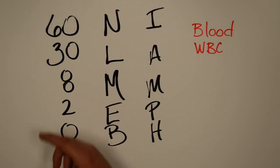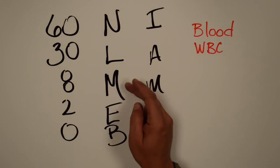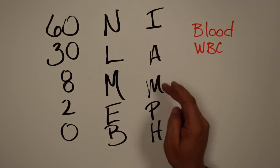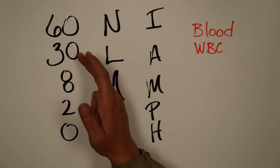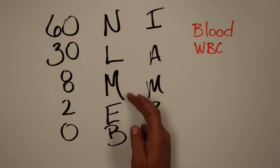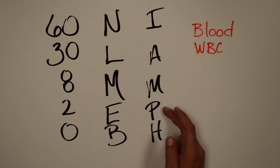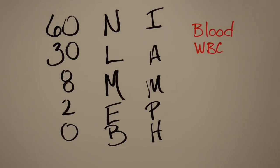You can just write that down real fast: 60-30-820-N-L-M-E-B-I-A-M-P-H. 60-30-820, never let my engine blow in a Mary Poppin' sissy fit. Now you know everything you need to know about white blood cells.